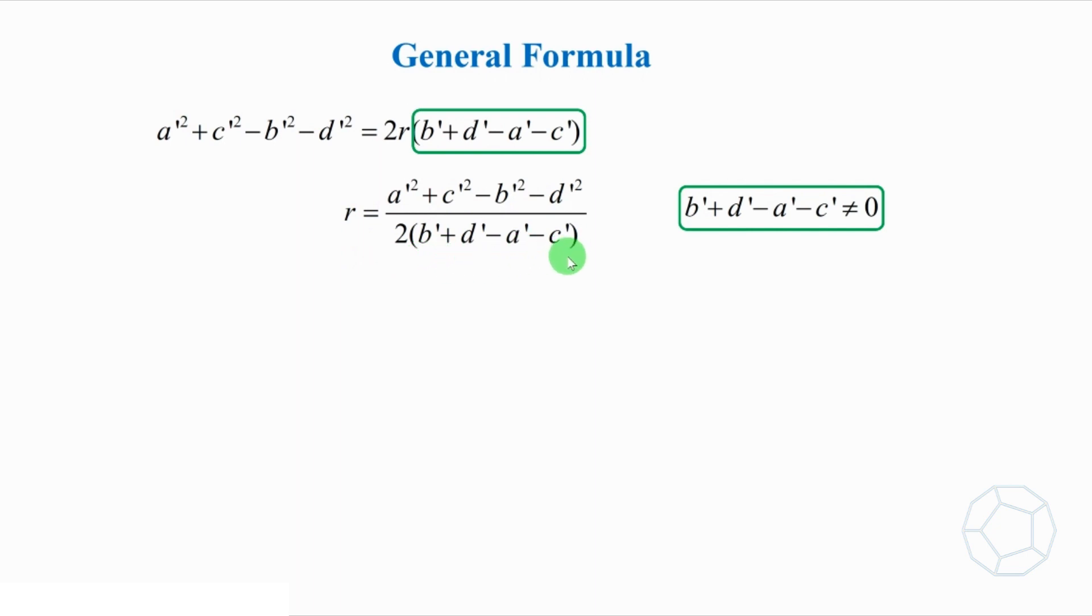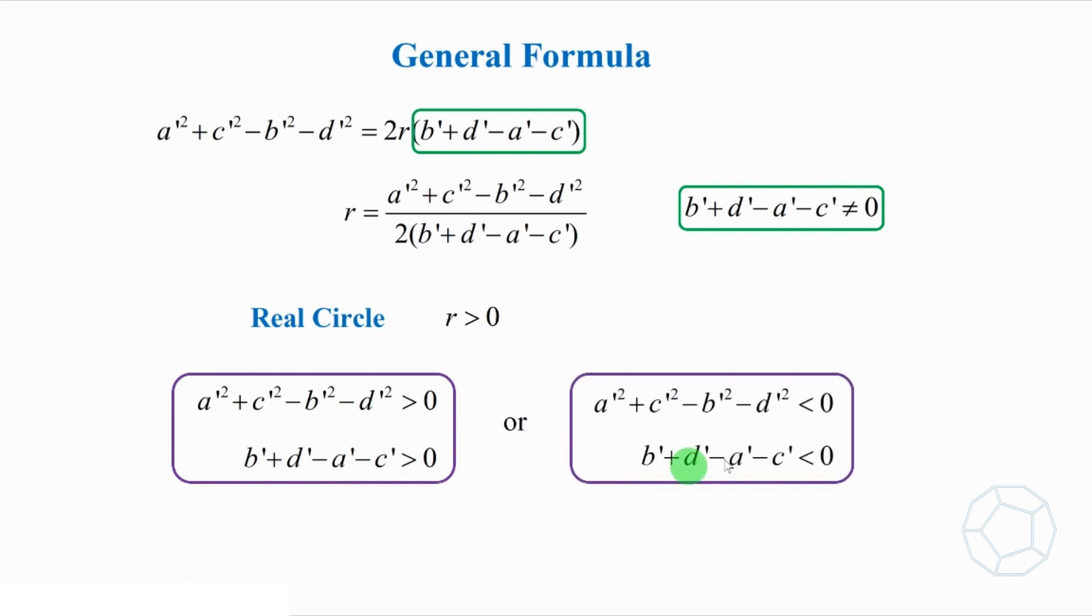Great! But does this formula always make sense? Both numerator and denominator involve subtractions, so they may be positive or negative. For a real circle with positive value of r, then either both of them are positive or both of them are negative.